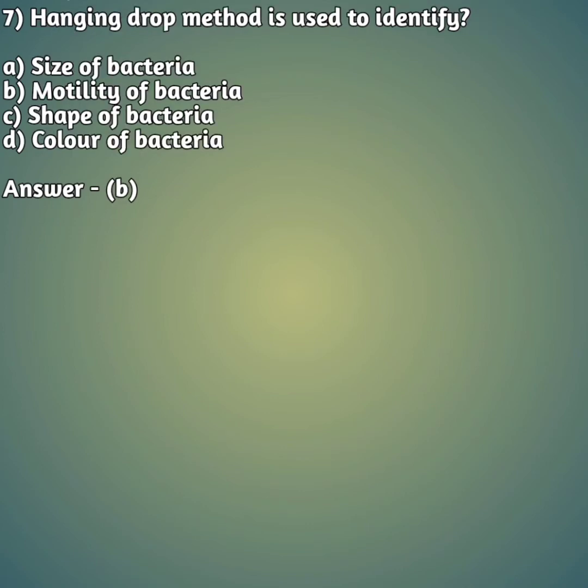Our seventh question: the hanging drop method is used to identify — option A: size of bacteria, option B: motility of bacteria, option C: shape of bacteria, option D: color of bacteria. The right answer is option B — the hanging drop method is always used to identify the motility of bacteria.